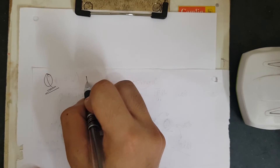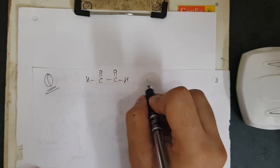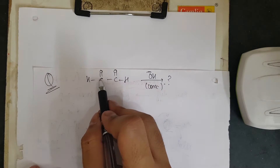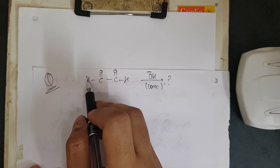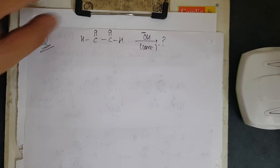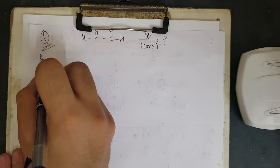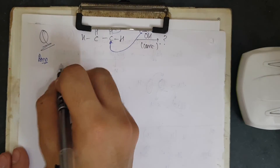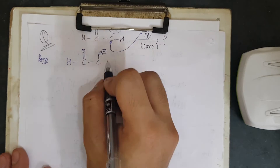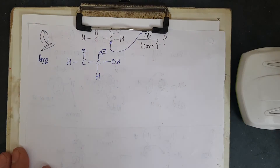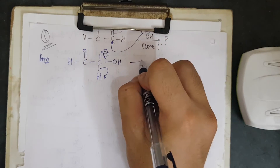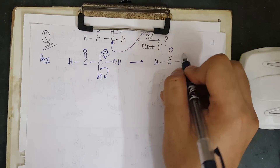Now let me go to the next case: intramolecular Cannizzaro reaction. The question is HCOCHO (glyoxal) with concentrated OH⁻, what is the product? Again, the carbonyl has no adjacent carbon with hydrogen, so no alpha hydrogen is present and we proceed by the Cannizzaro mechanism. OH⁻ attacks the carbonyl: we get HC(O⁻)(OH)CHO. The next step: electron density takes out H⁻ to give HCOCHO with a C=O plus H⁻.